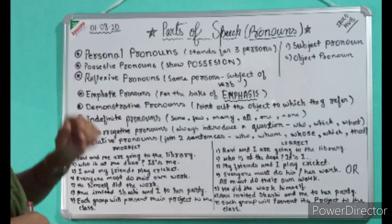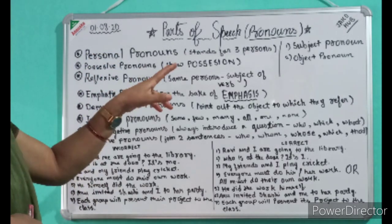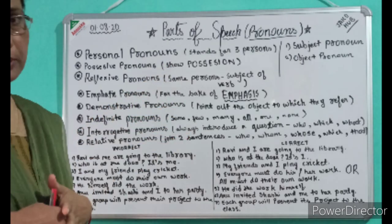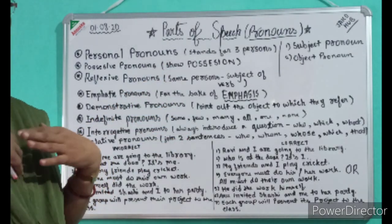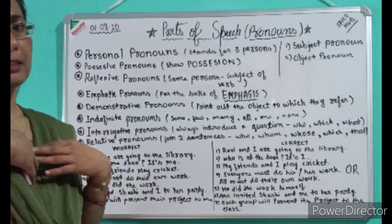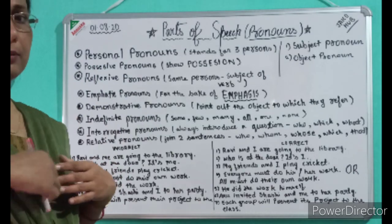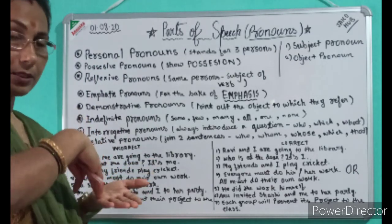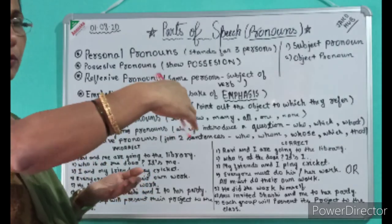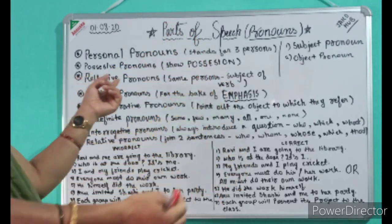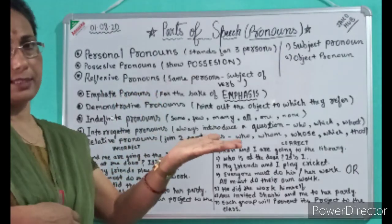Next, reflexive pronoun. What is reflexive pronoun? It refers to the same person as the subject of the verb. Suppose, 'I will do this work myself.' Here, 'I' is the personal subjective pronoun and 'myself' is the reflexive pronoun. 'You will play football yourself.' 'You' is second person singular personal pronoun and 'yourself' is the reflexive pronoun.